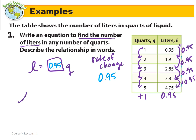So what this describes is that for each liter, we will have 0.95 times the quarts. So in order to find out how many liters, we would take the quarts that we have and multiply that times 0.95 to get the liters.